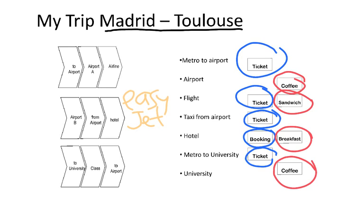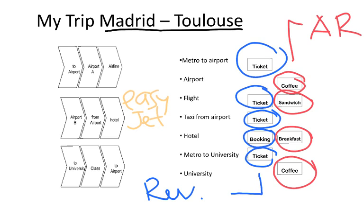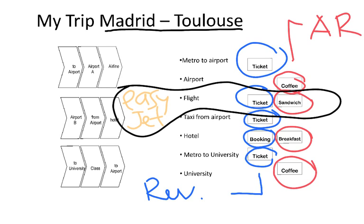For all these businesses — the metro in Madrid, the airport, the airline, the taxi, the hotel, and so on — the ticket or fare is the main source of revenue. What is shown in red is called ancillary revenue, because it's not the main business but something on top of that. In the case of EasyJet, it generates revenue by selling me the ticket but also by selling me the sandwich on board.